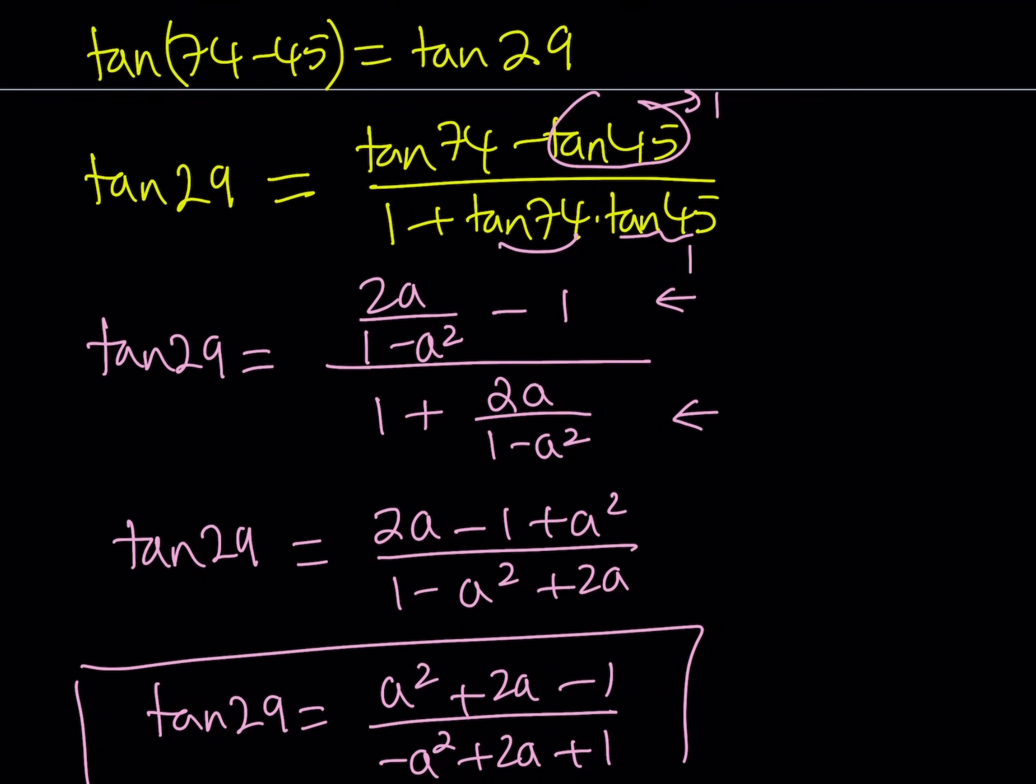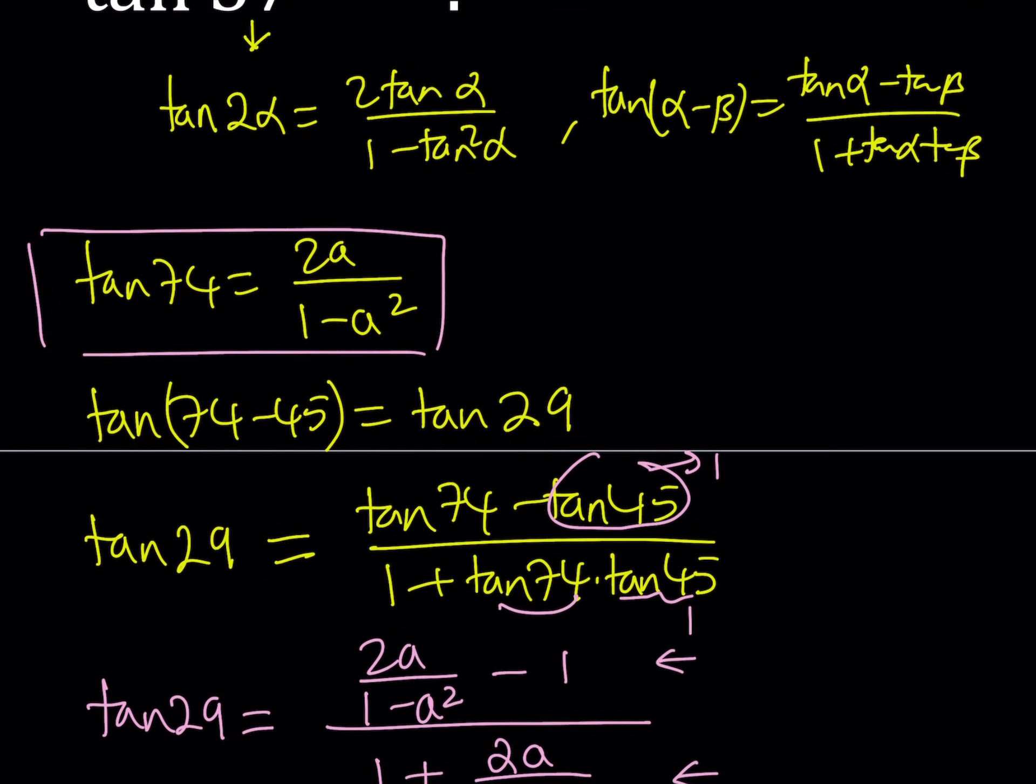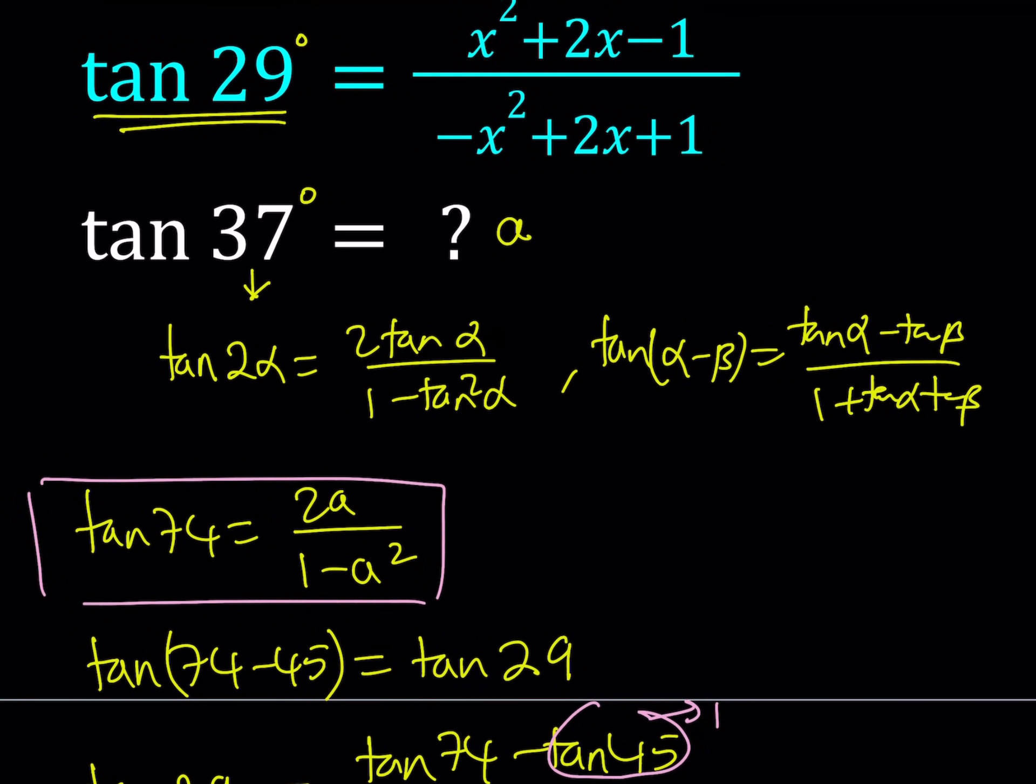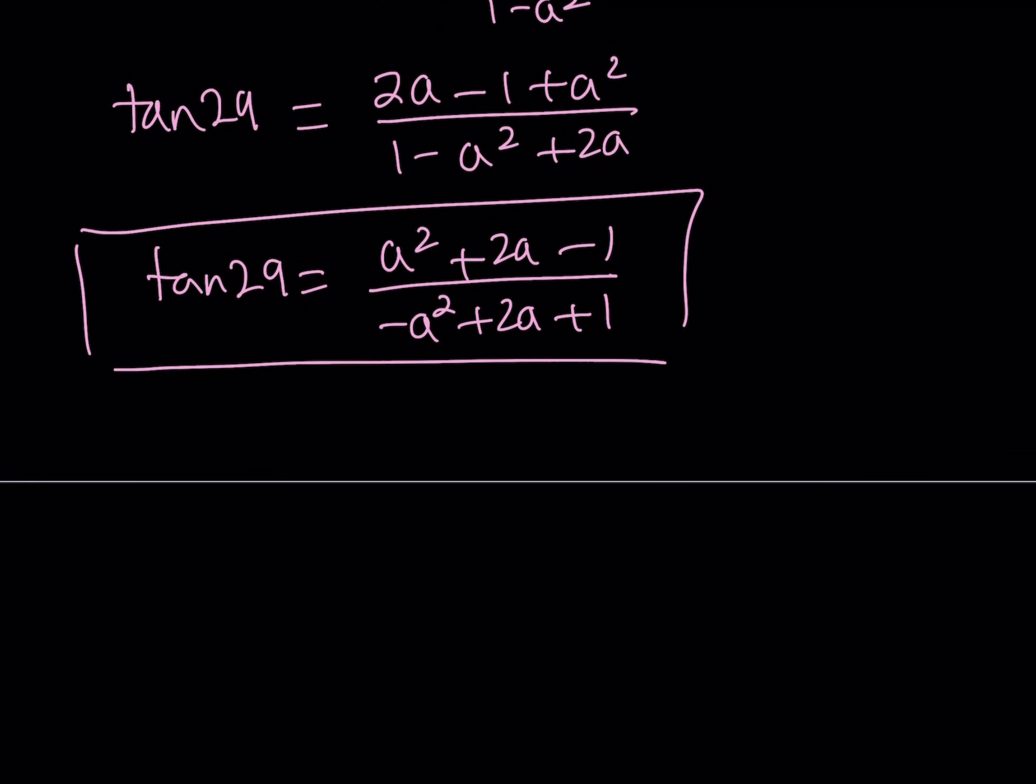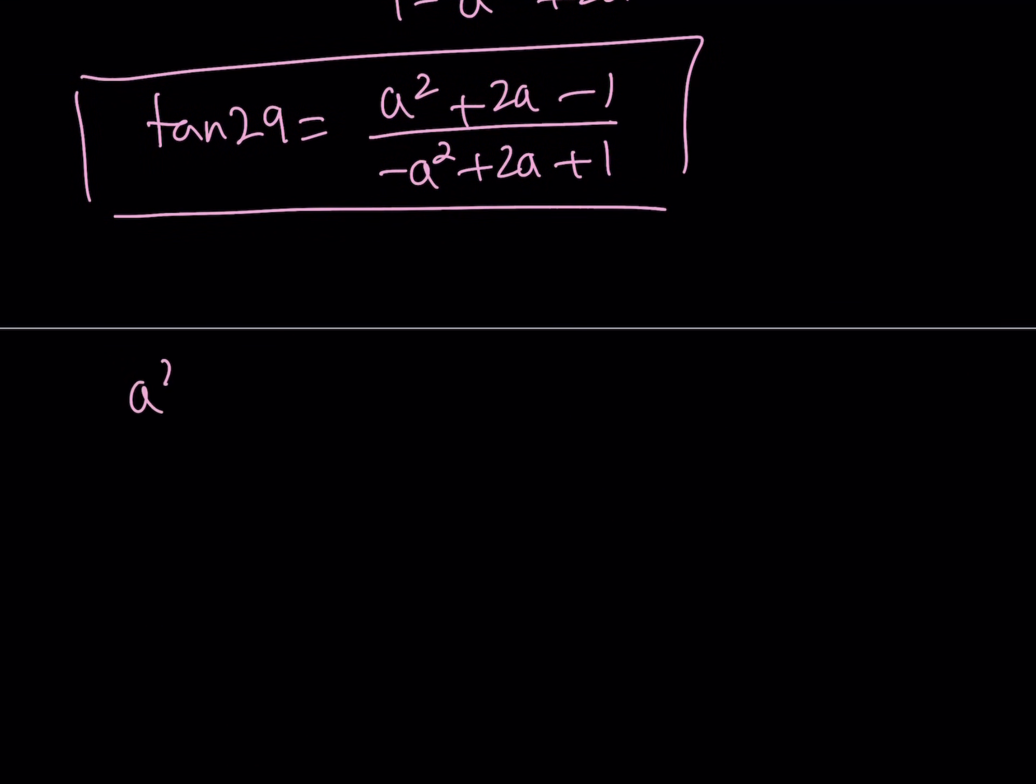But if you remember, tangent 29 was given to us in terms of x and our goal was to find a in terms of x. So let's go ahead and set those expressions equal to each other. You're going to notice some similarities. Since both of these expressions are equal to tangent 29, then they're equal.